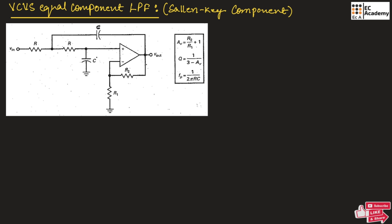In case of VCVS unity gain low pass filter, in case of VCVS equal component low pass filter, both resistor values and capacitor values are same.